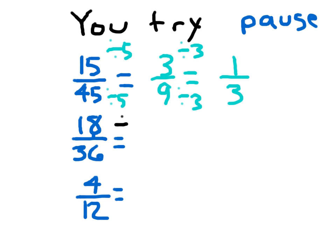For that next problem, you might look at 18 and 36 and recognize they're both divisible by 9. There's more than one way to always solve a problem, just as long as you end up with that same simplest form. 18 divided by 9 is 2, and 36 divided by 9 is 4.